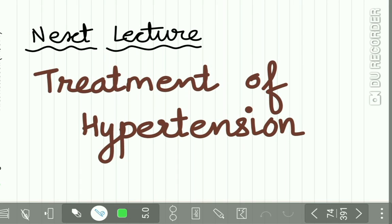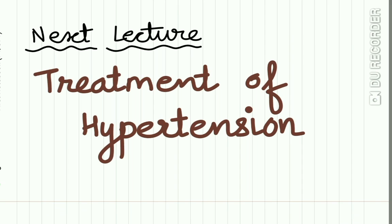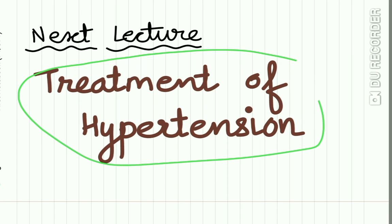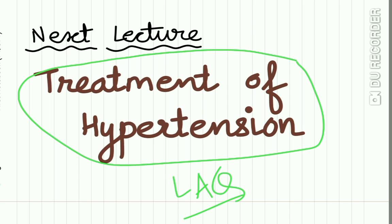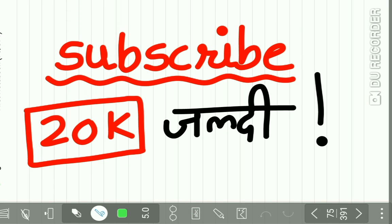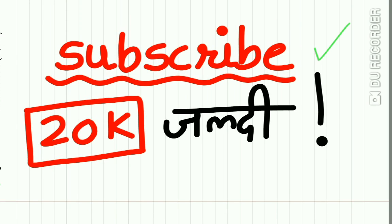Uses of sodium nitroprusside include producing controlled hypotension, refractory CHF cases, and pump failure accompanying myocardial infarction. This completes our discussion of anti-hypertensive drugs. The next lecture will cover the treatment of hypertension separately, as it is frequently asked in exams. Please subscribe to our channel — we want to reach 20k subscribers very soon!